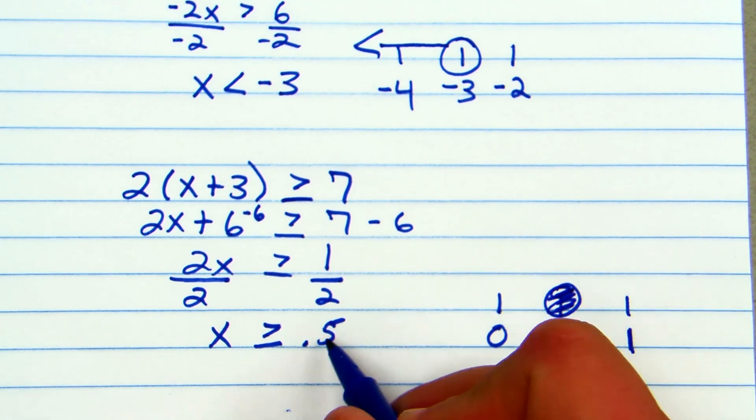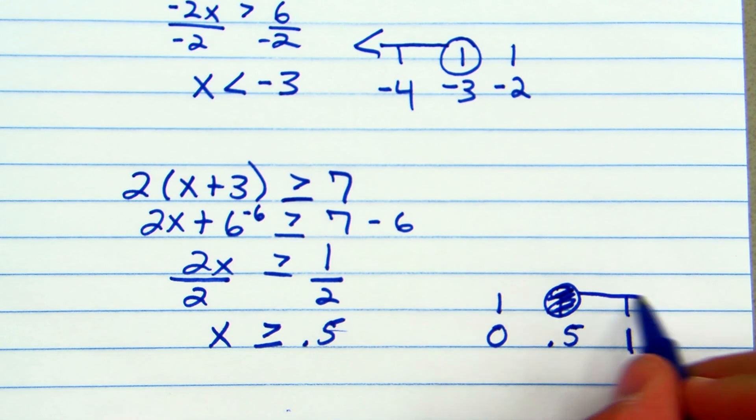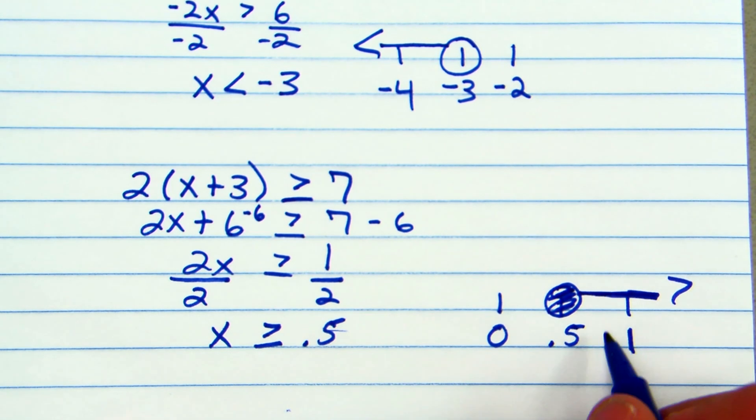Since the variable comes first and it points to the right, I'll go to the right. That just says that x is greater than or equal to 0.5.